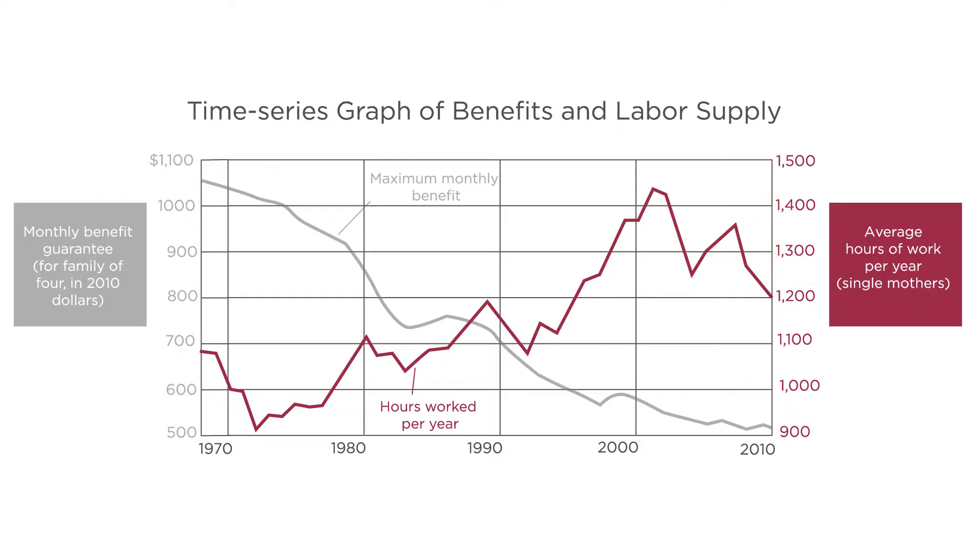Government benefits go down and labor supply goes up. What do these time series data tell us about the causal relationship between benefits and labor supply? By themselves, they don't tell us all that much.